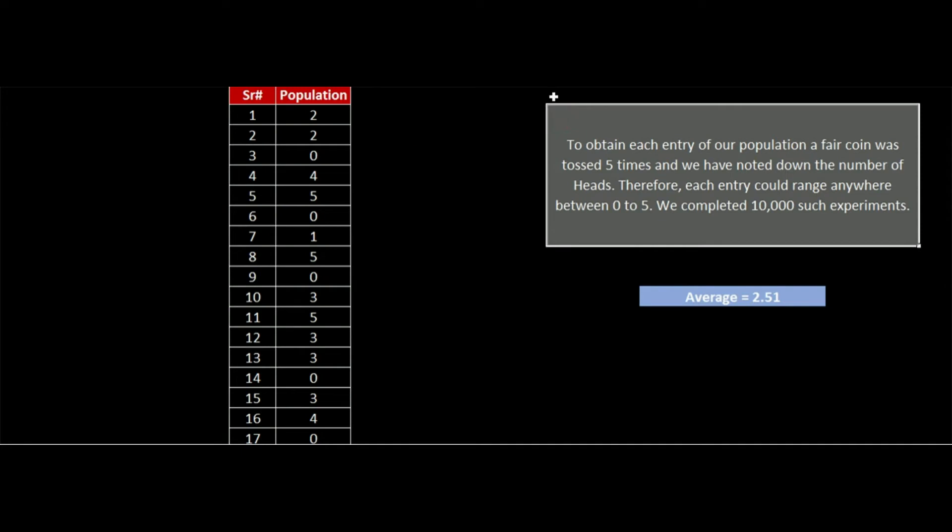So let's further extend the experiment that we just discussed. Let's assume that the same experiment is repeated multiple times. To obtain each entry of our population, a fair coin was tossed five times and we have noted down the number of heads. Therefore, each entry could range anywhere between 0 to 5. We completed 10,000 such experiments.